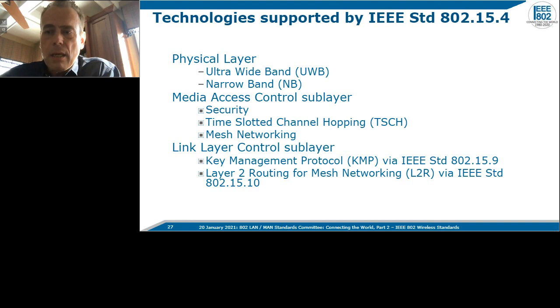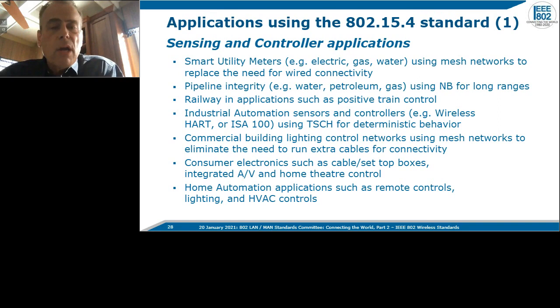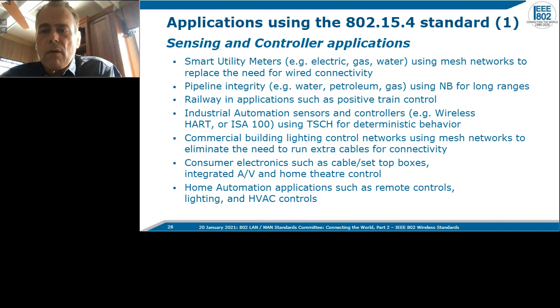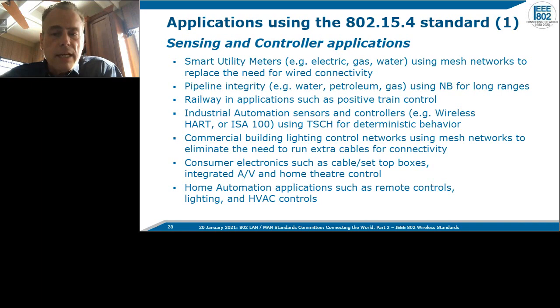Technologies supported by 802.15.4 include ultra-wideband, narrow band, security, time-slotted channel hopping used for industrial networks such as WirelessHART, and mesh networking used by almost all deployments. Applications include sensing and control, smart utility meters using mesh networks to replace wired connectivity over hundreds of miles, pipeline integrity monitoring for water and petroleum, railway positive train control for safety in the US, industrial automation sensors and controllers using TSCH for deterministic behavior, and commercial building lighting control networks using mesh to eliminate extra cable runs for easy retrofits.